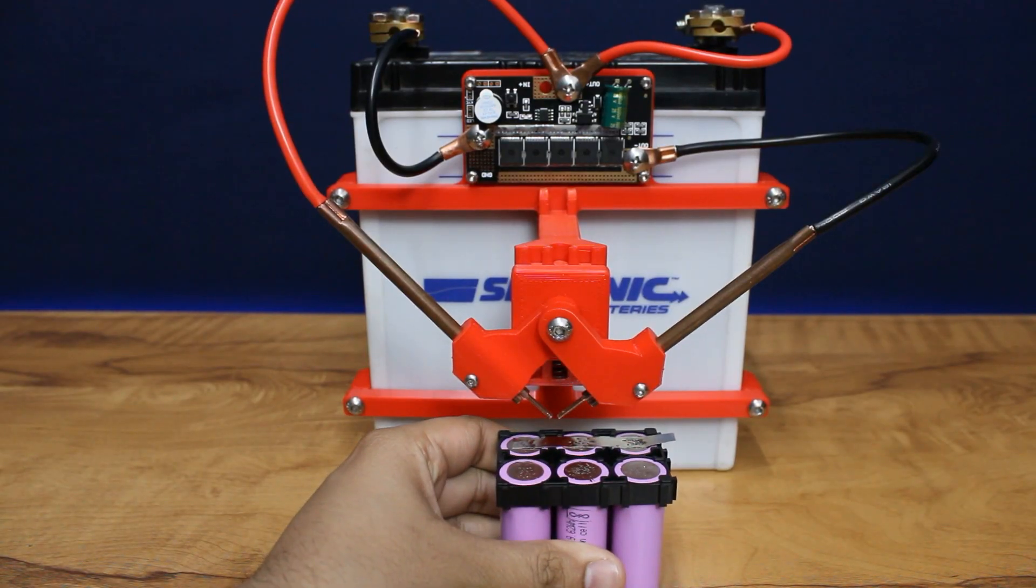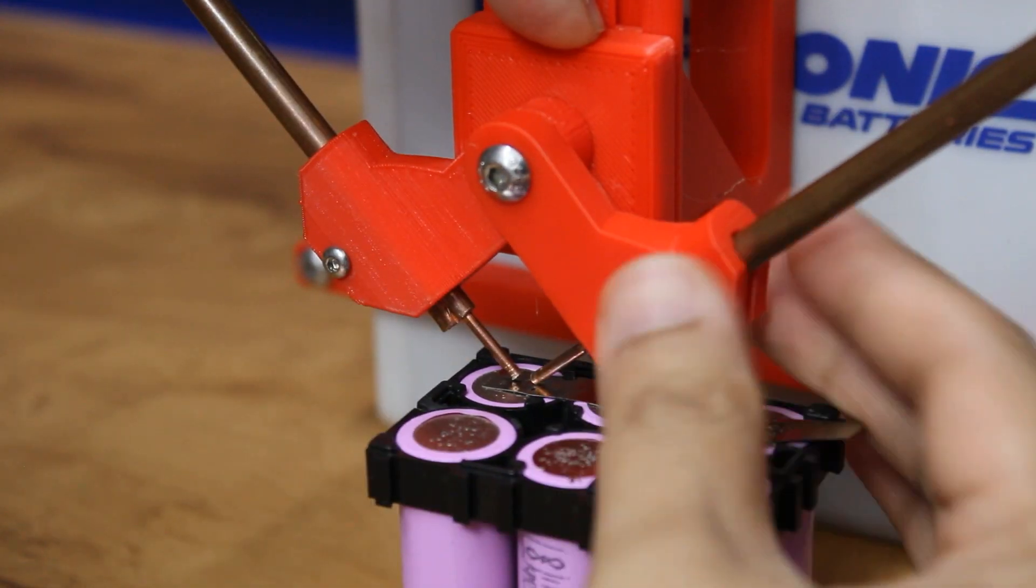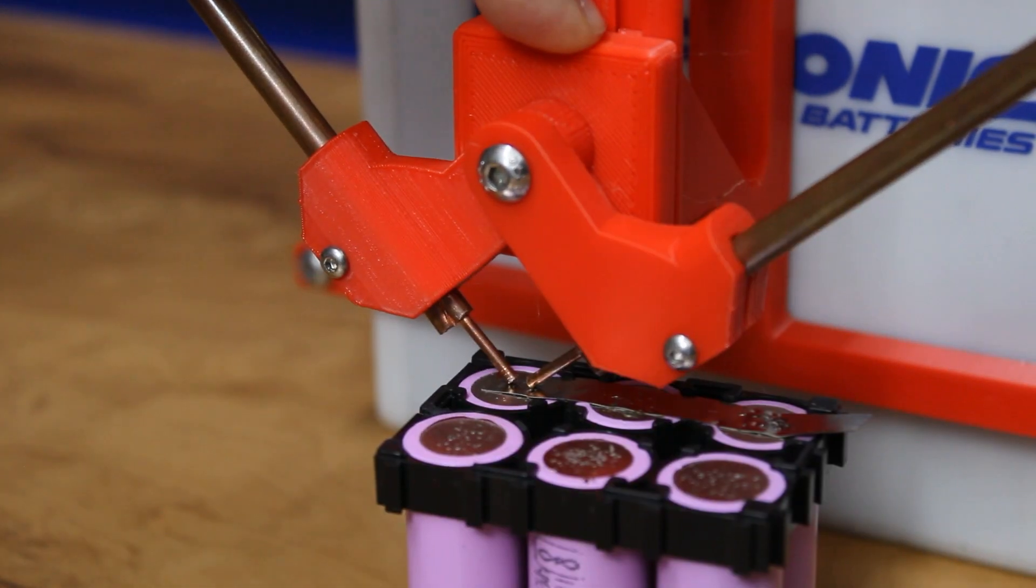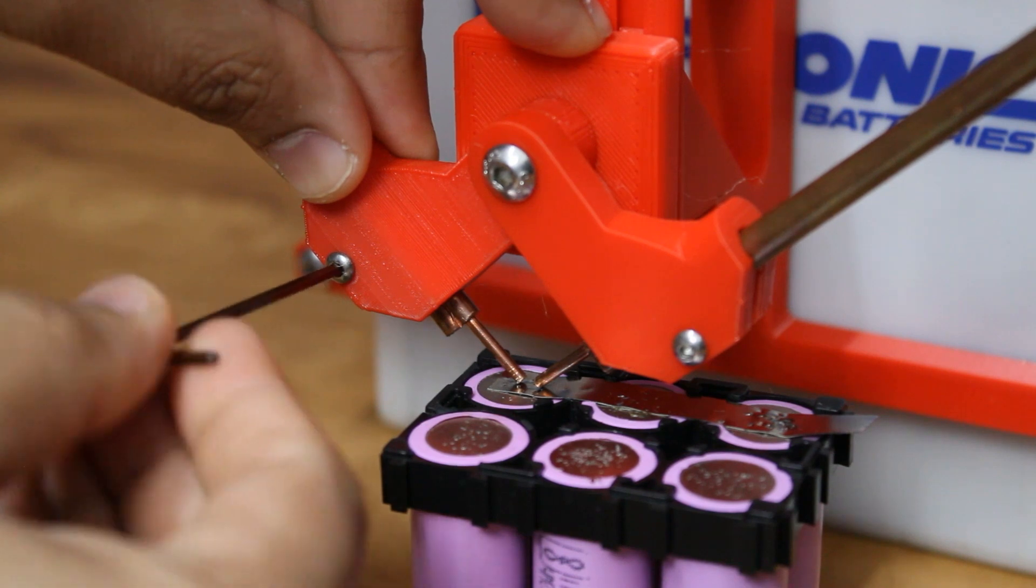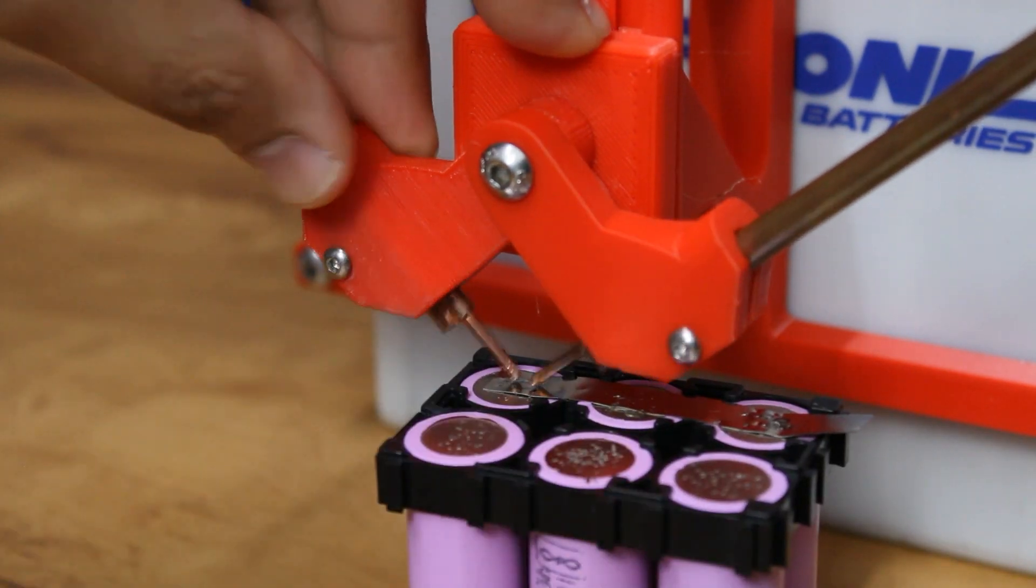Once the probes are in place, place the cells below and adjust the angle so that both the probes are at a 45 degree angle from the cells and have equal distance. Tighten the screws so that they stay in place.